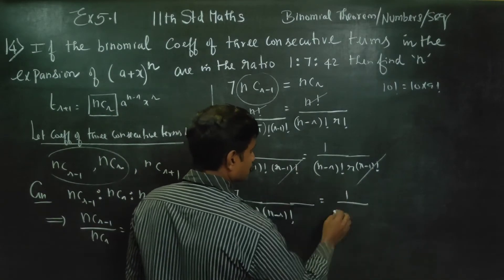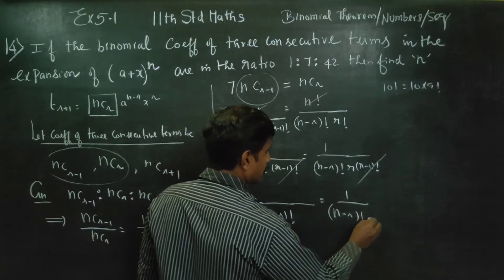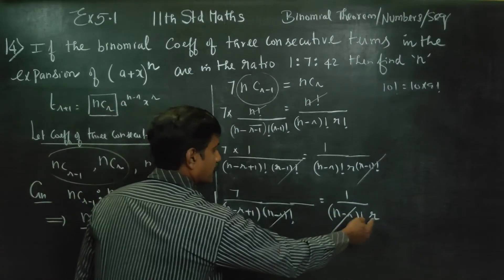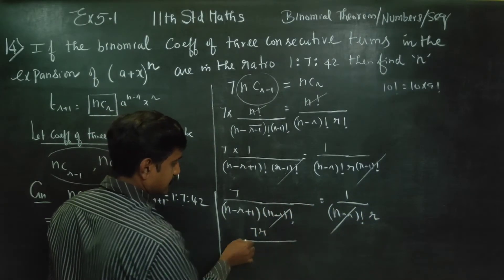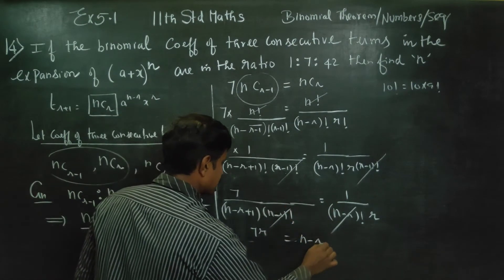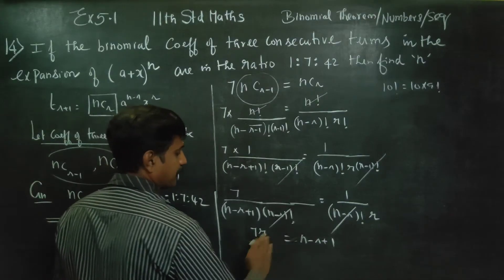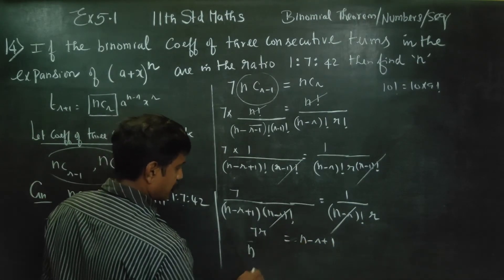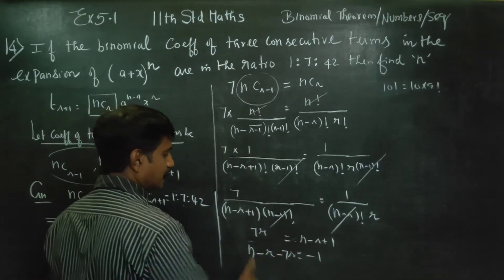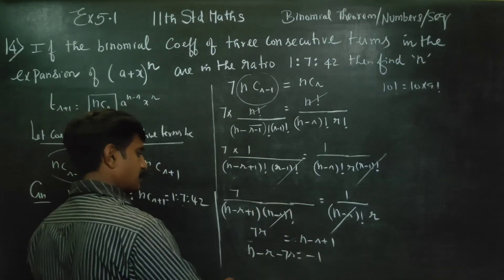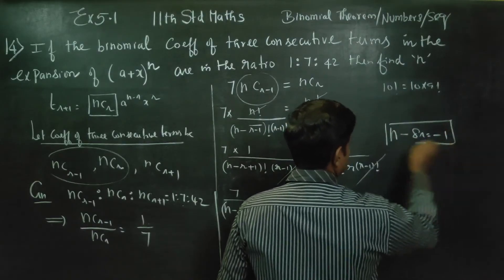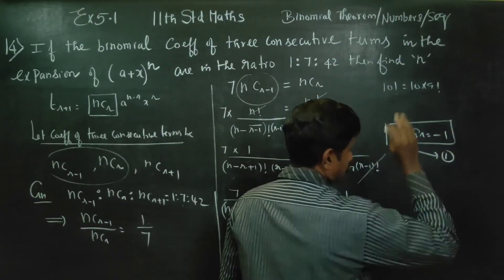After canceling, we get n minus r factorial into r factorial. Cross-multiplying gives n minus r plus 1 equals 7r. Rearranging: n minus r minus 7r equals minus 1, which gives n minus 8r equals minus 1. This is equation number 1.